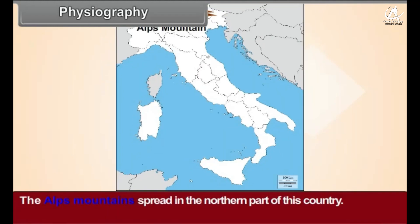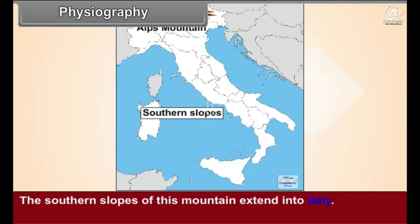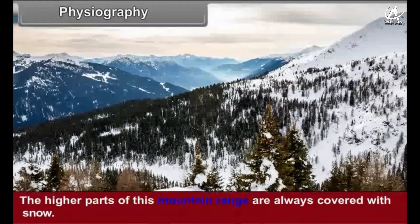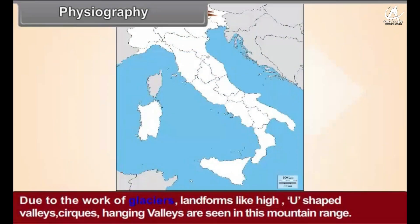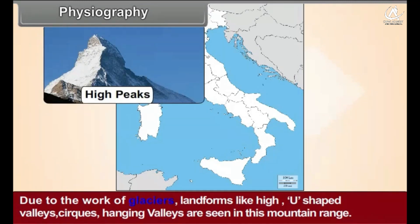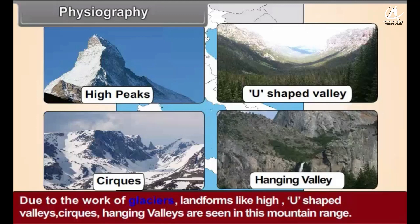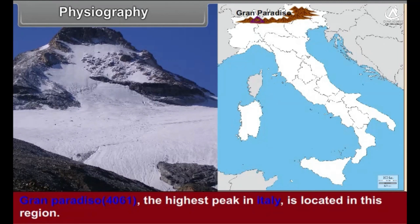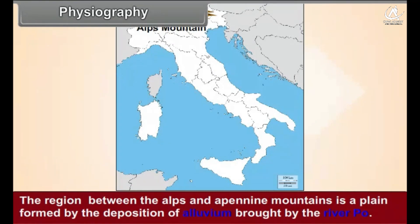Physiography: The Alps mountains spread across the northern part of Italy. The southern slopes of this mountain range extend into Italy. The high parts are always covered with snow, and due to glacial action, landforms like high peaks, U-shaped valleys, cirques, and hanging valleys are seen. Grand Paradiso (4,061 m), the highest peak in Italy, is located in this region.